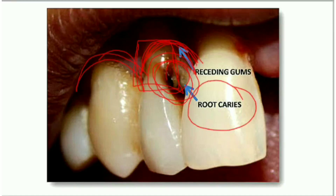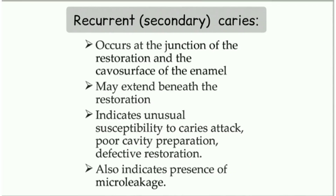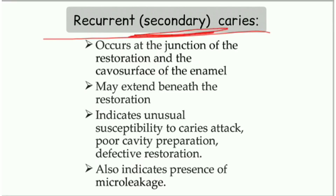Next, moving forward to recurrent caries or secondary caries. 'Recurrent' means occurring again — so here the caries is occurring again over the same lesion which was already treated. Secondary caries has the same meaning. It occurs at the junction of the restoration and the cavosurface of the enamel.